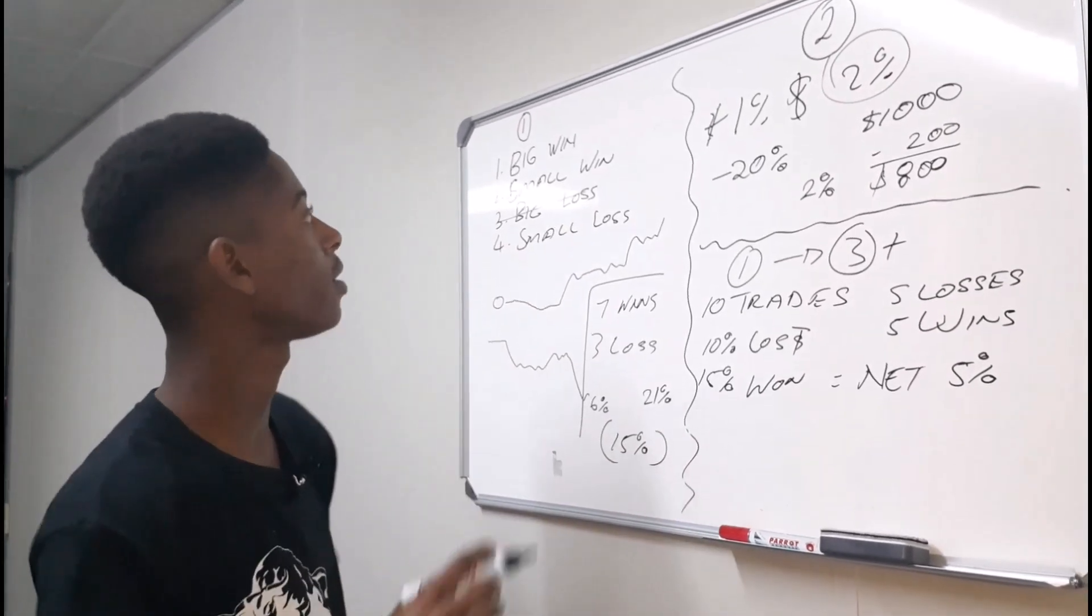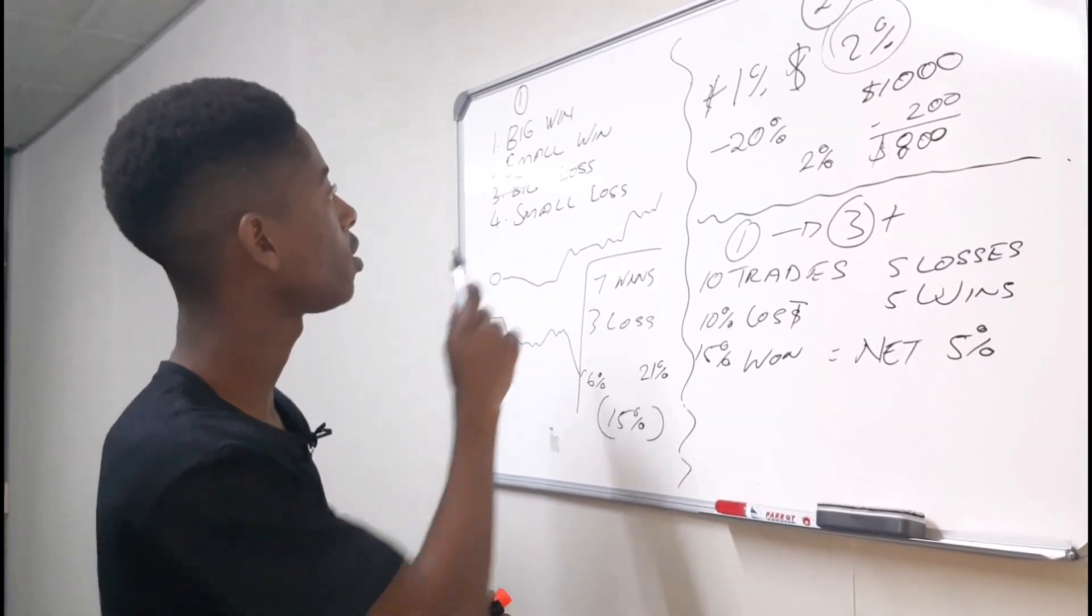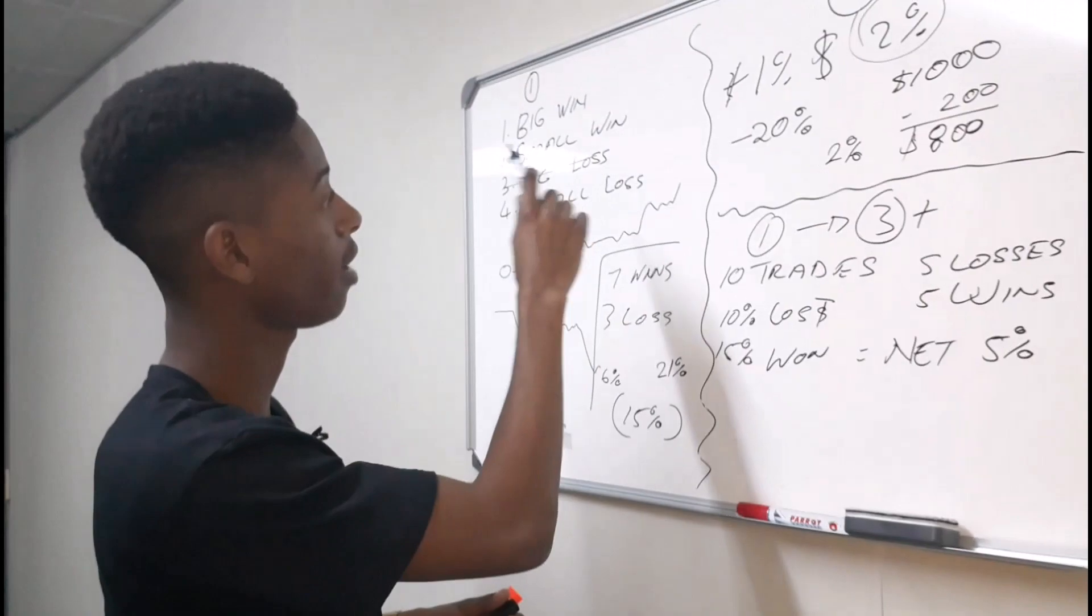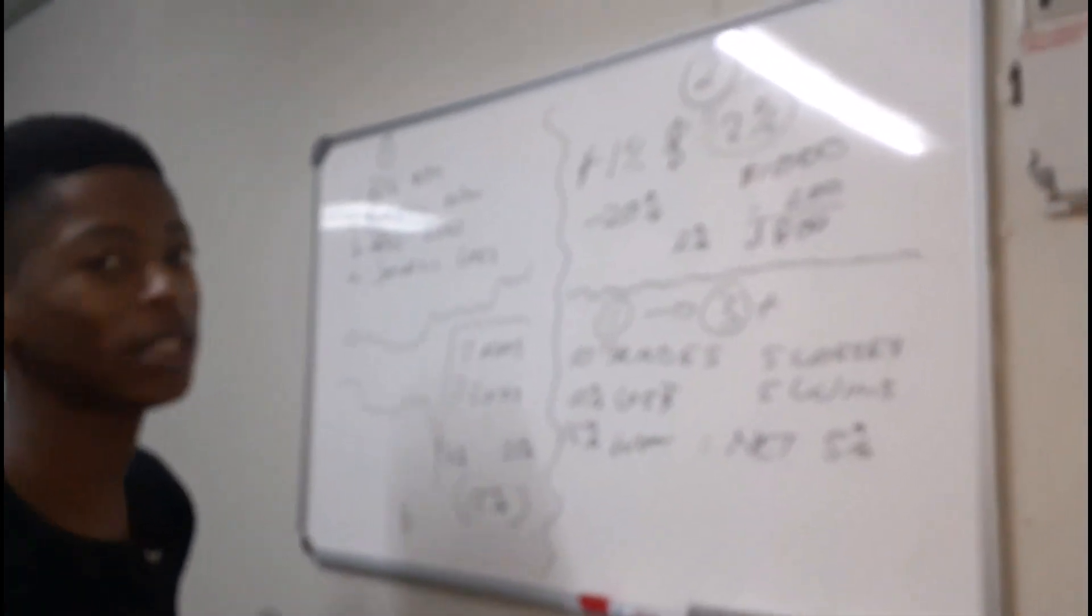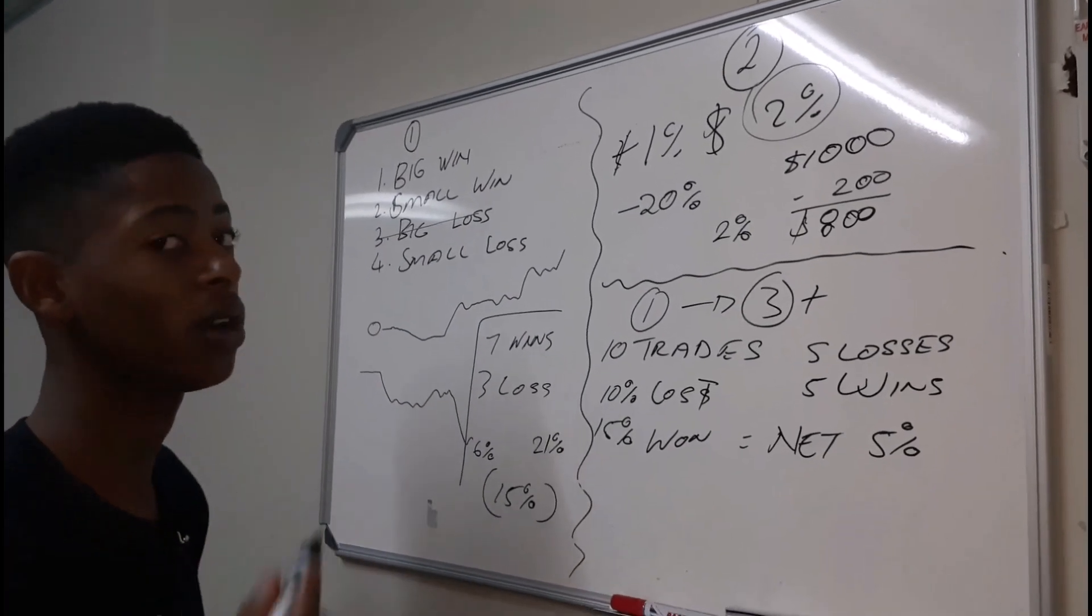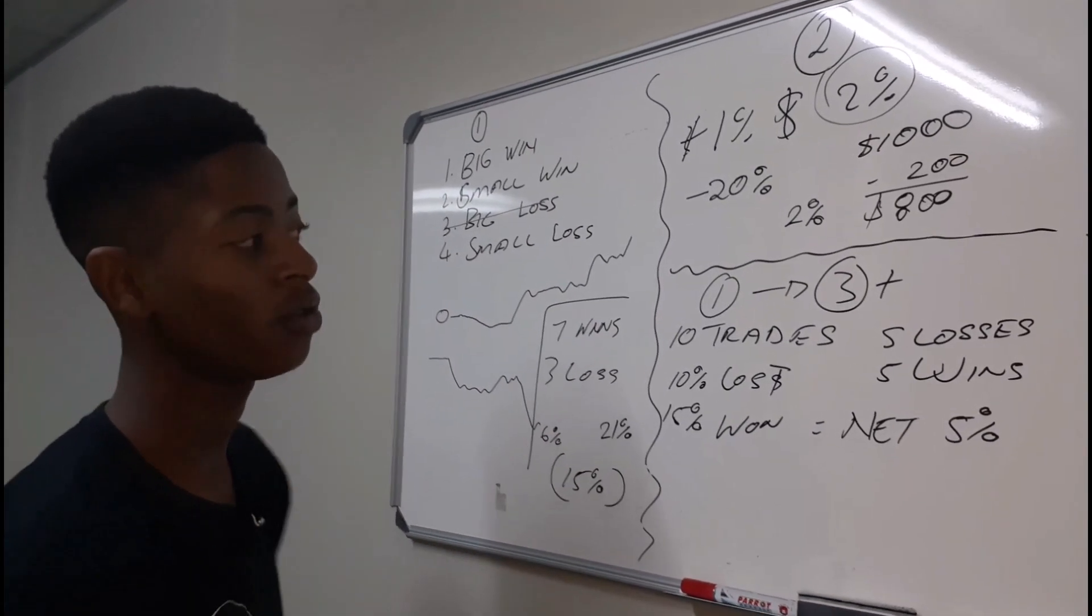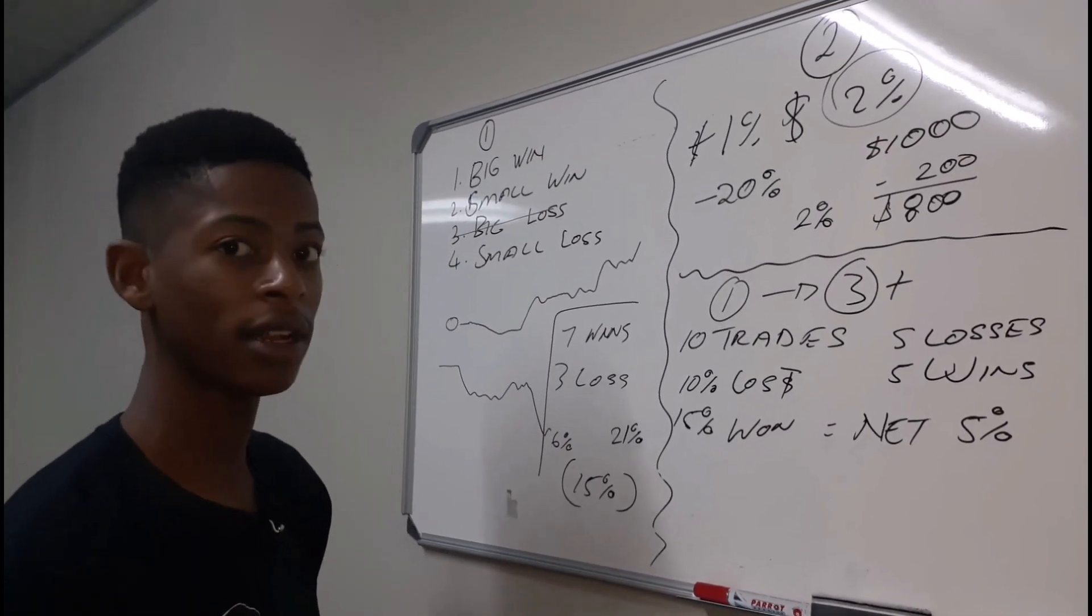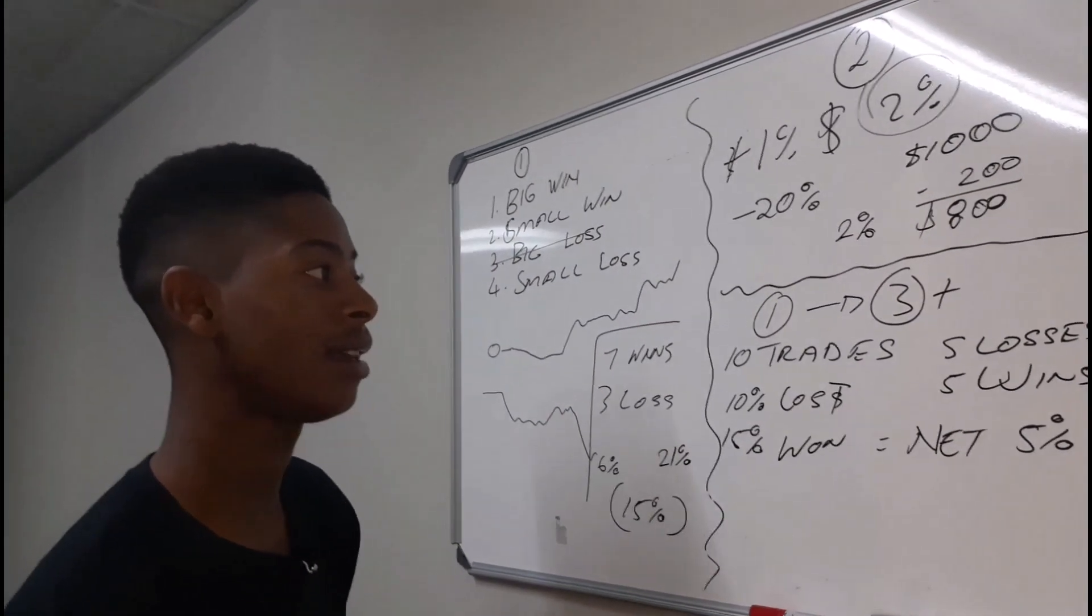But these are the 3 secrets that I wanted to share with you guys. The first one, you just have to cancel out the big loss. You have 4 types of trades. You have to cancel out the big loss. The second one, you have to just continue sticking to the same risk. Never believe in a setup too much and then you risk too much on it. And the third one, you have to always reward way more than what you're risking. Not even 2 times, but 3 times.